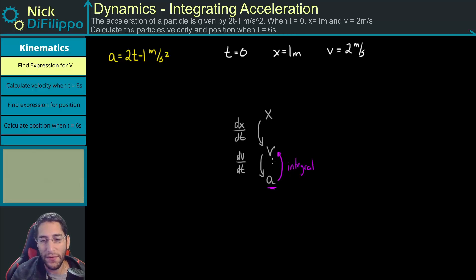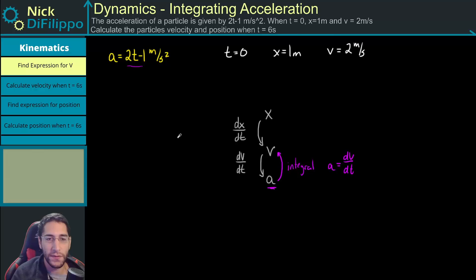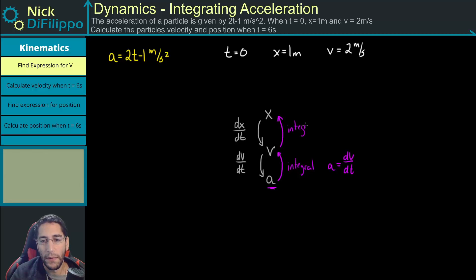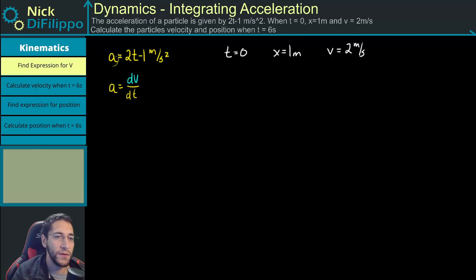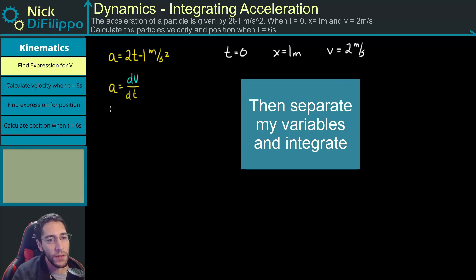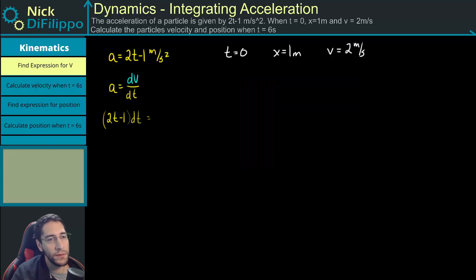We will take the integral of acceleration, which equals dv/dt. Since acceleration is a function of time, this is a good relationship to use. Then, to go from velocity to position, we take another integral, using the fact that velocity is the change in position over the change in time. Let's start by writing the expression for acceleration: we know acceleration equals dv/dt, and substituting what we have, we get 2t minus 1 times dt equals dv.